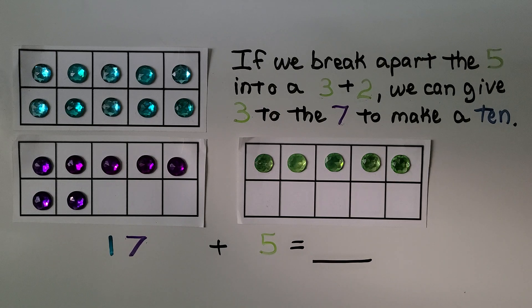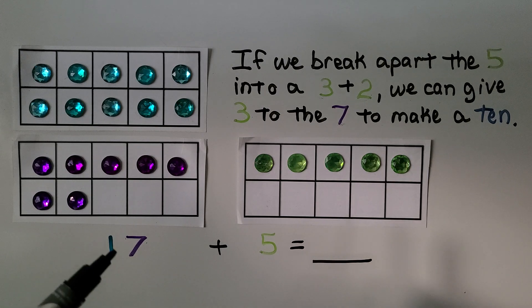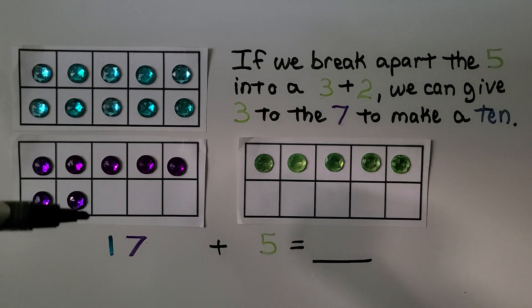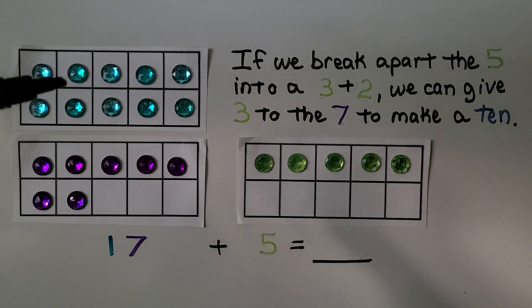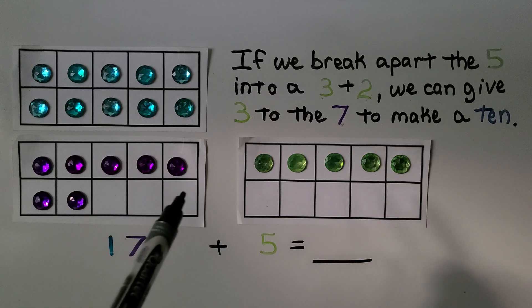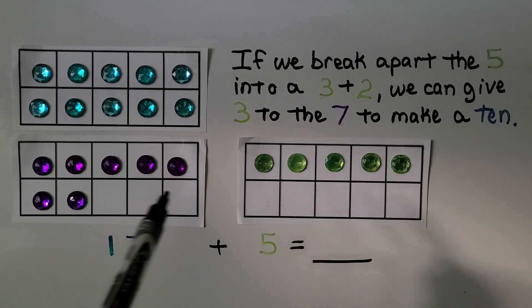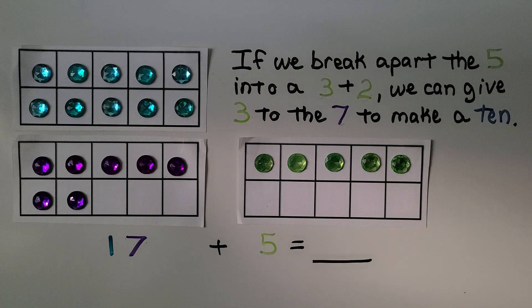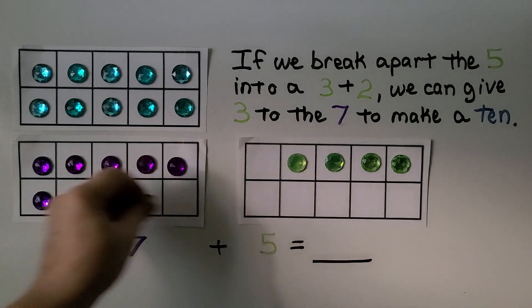So here's an example with some ten frames. We have 17 plus 5. We have 17 here. We have a ten, 1 ten and 7 ones. We want to add 5 to it. We can see that the 7 needs 3 more to make a ten. So we break apart the 5 into a 3 plus a 2. We give 3 to the 7.